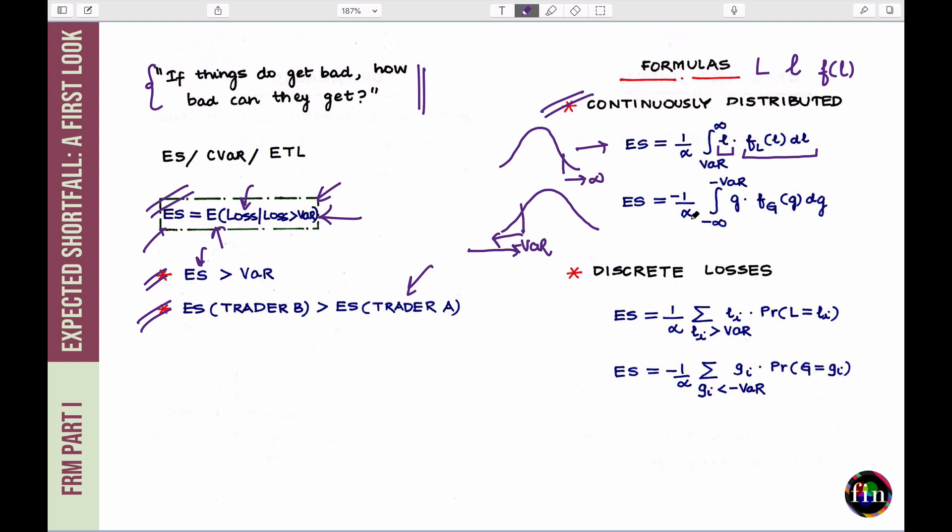So, it will be 1 by alpha integral from minus infinity to minus VAR of a gain times the probability that the gain lies in the vicinity of this G. In the end, you also need to negate it. ES like the VAR is a loss and hence, you need to negate it because you've just computed it using gains and not losses.